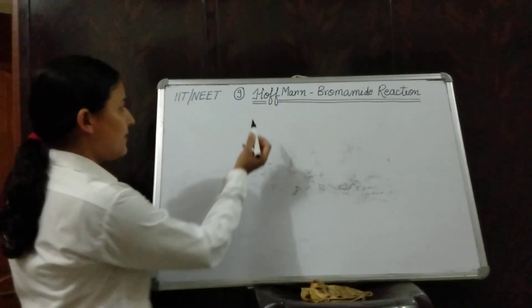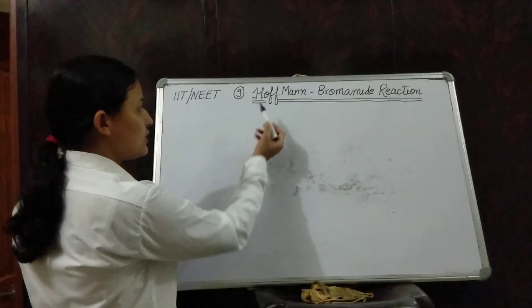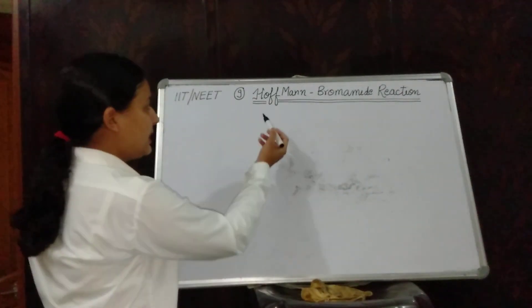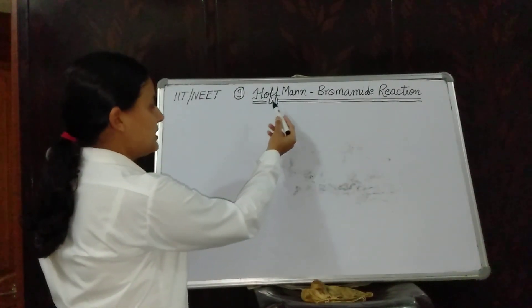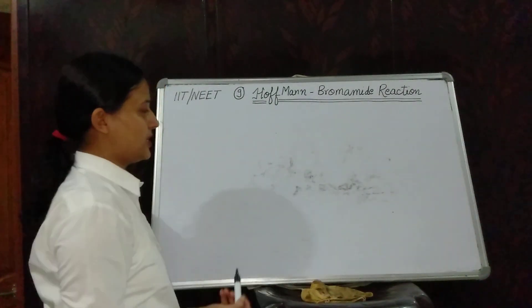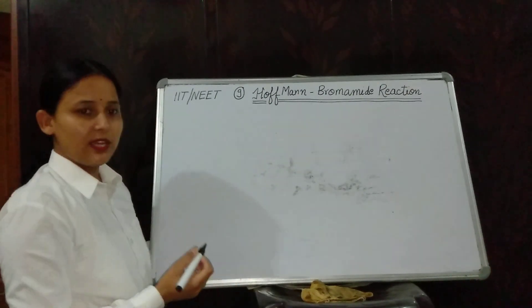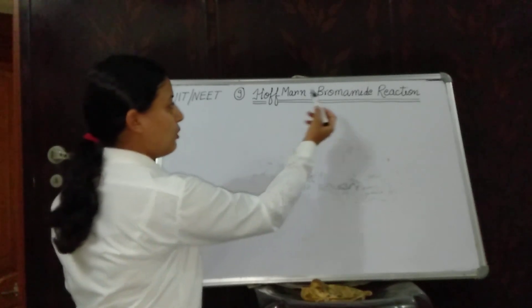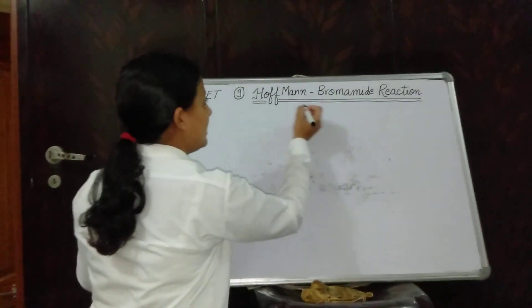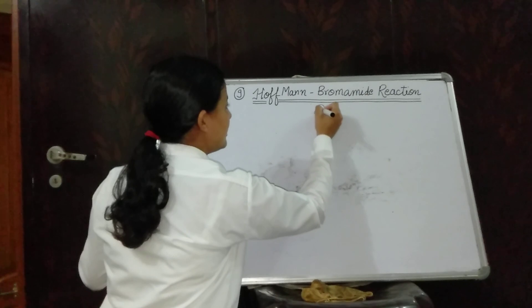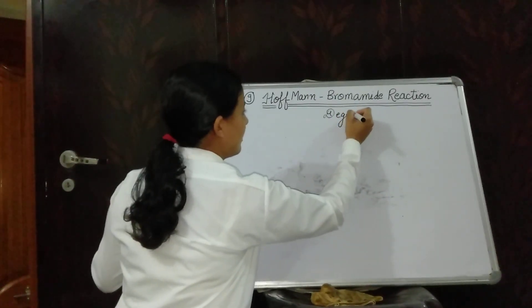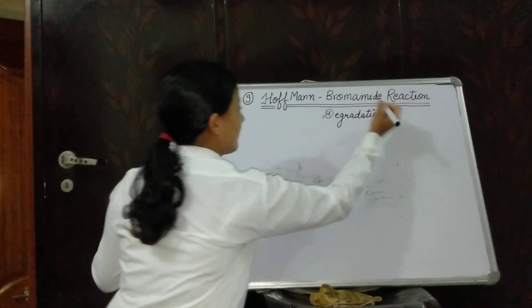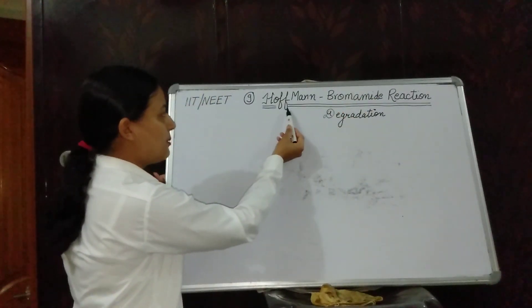This is our 9th name reaction, named as Hoffman Bromamide reaction — or in many books you can see this is called Hoffman Degradation reaction. First we see what is the meaning of Hoffman and what is the meaning of Bromamide. I am writing here: Hoffman Degradation. Hoffman is the name of a scientist.